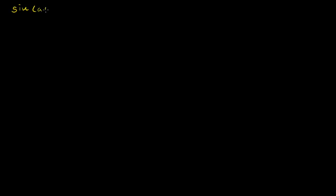The trig identities I'm going to assume that we know — because I've already made videos on them and they're a little bit involved to prove — are that the sine of a plus b is equal to the sine of a times the cosine of b, plus the sine of b times the cosine of a. That's the first one I assume going into this video we know.